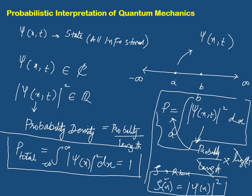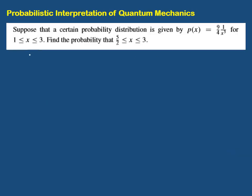Let's start with a numerical. The rho here is not p — it is rho, the probability density. Suppose that a certain probability distribution is given by rho equals 9 divided by 4x cubed, for x from 1 to 3. This means the space is defined from 1 to 3 — unlike the general case of minus infinity to plus infinity, this physical system is defined between 1 and 3, with 2 being between 1 and 3, and 2.5 (which equals 5/2) being between 2 and 3. The question is to find the probability that the particle is located between a = 5/2 and b = 3.